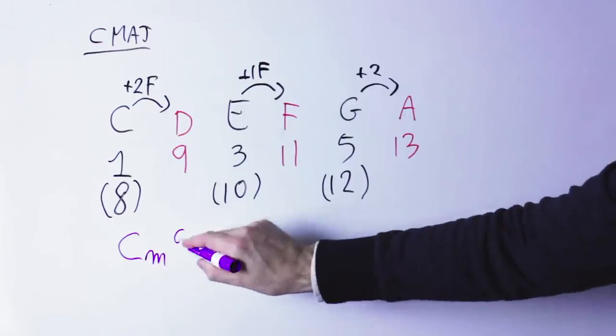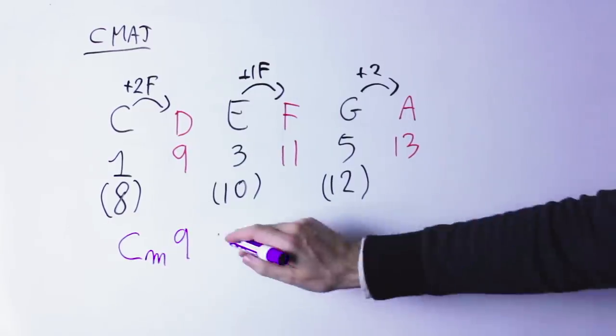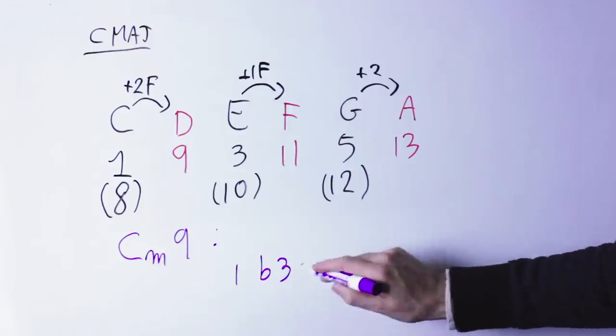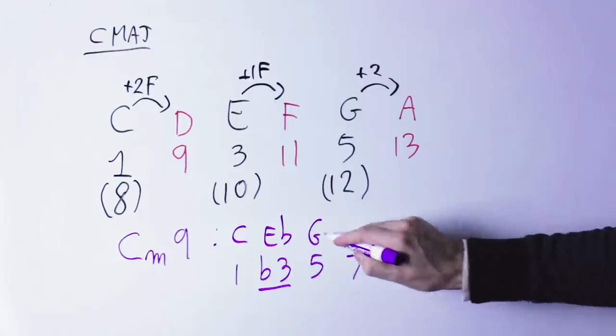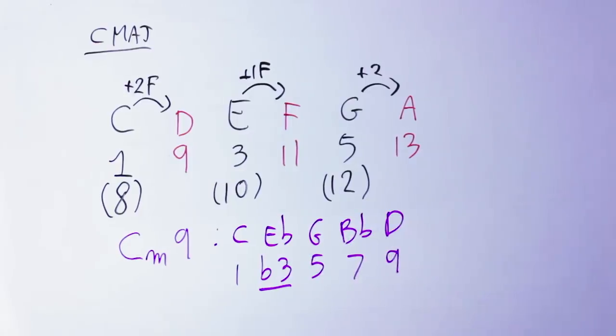If we had instead a C minor nine, we would instead have a C minor triad, but we will still add the seventh and the nine. So we'll have one flat three, because it's a minor, five, seven, nine, and the notes will be C, E flat, G, B flat, D.